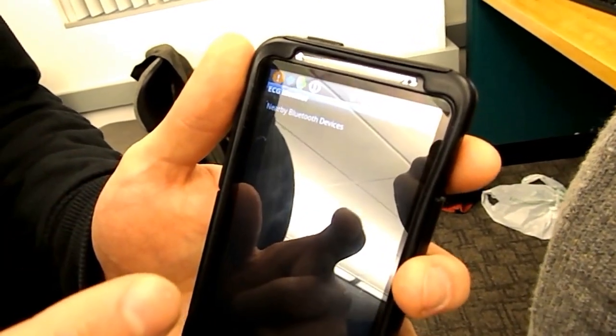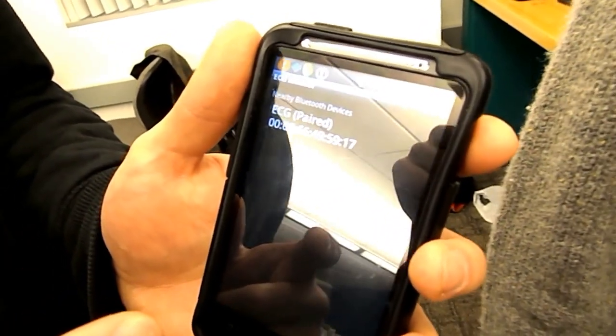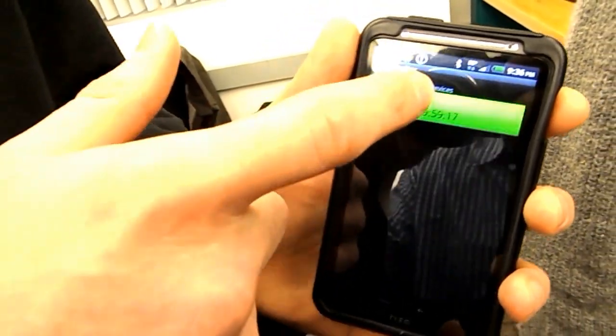Go to Bluetooth. It will search nearby Bluetooth devices. ECG is our device. So we will connect. And it should turn green.